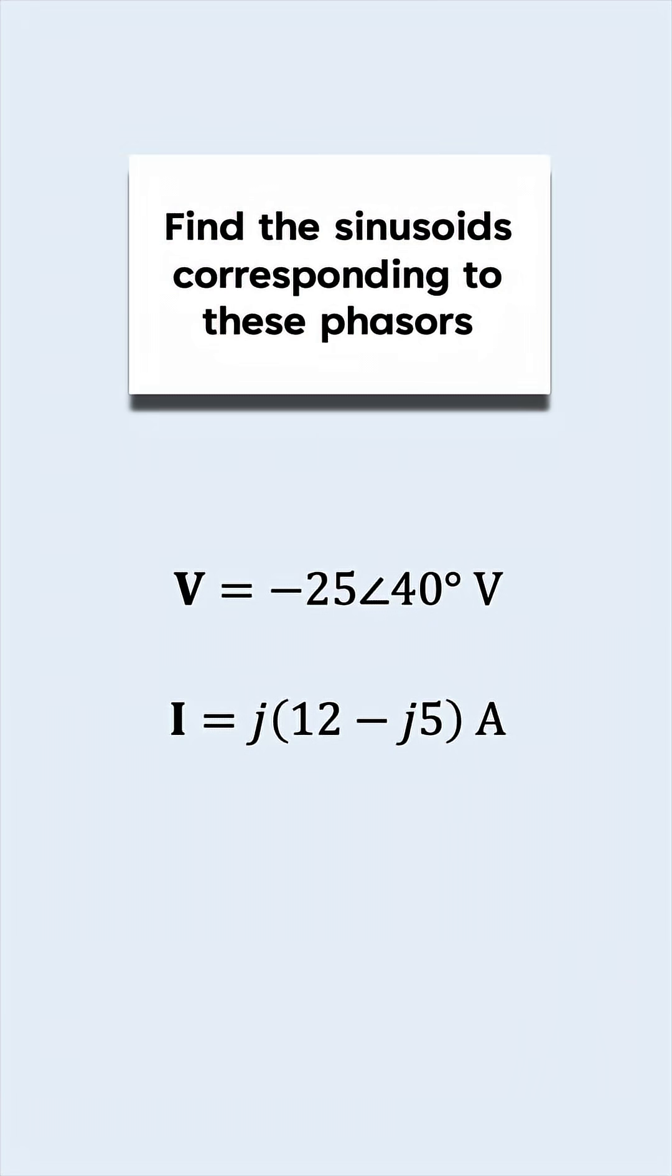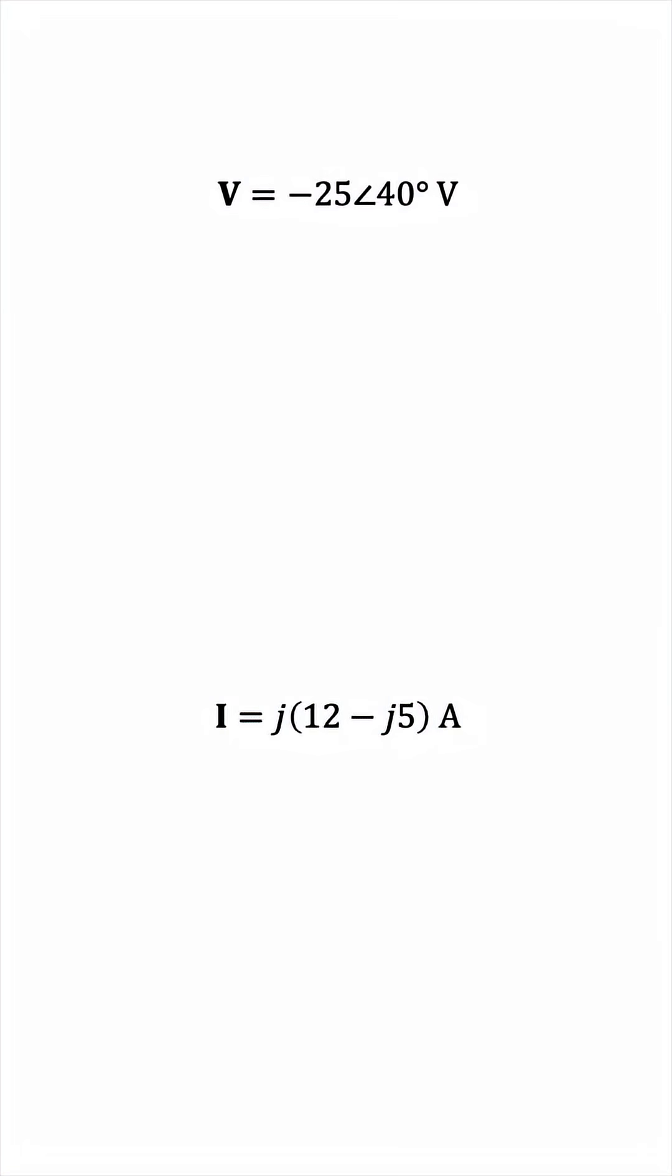Let's find the sinusoids corresponding to these phasors. The most general expression of a sinusoid involves an amplitude, Vm, a radial frequency, omega, and a phase angle, phi.